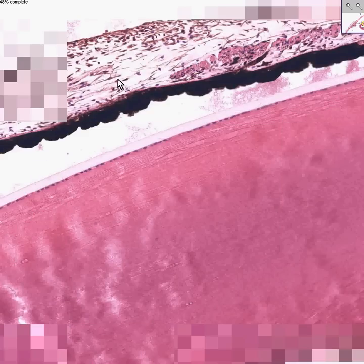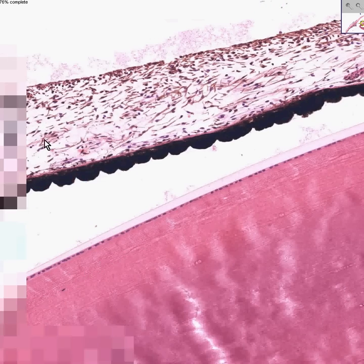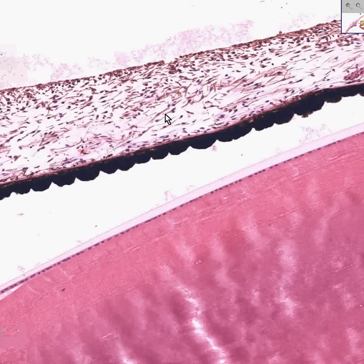And then you'll occasionally see more proximally in the iris, other little bundles of smooth muscle. And that would be the dilator. And they're under sympathetic control.